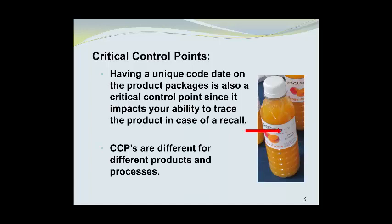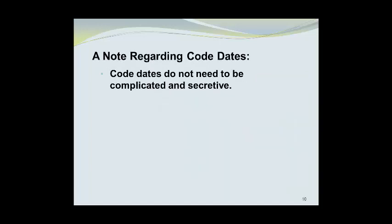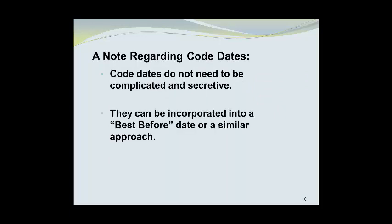CCPs are different for different products and processes. Code dates do not need to be complicated and secretive — they can be incorporated into a best before date. For example, a best before date of February 16th, 2017 at 3:07 PM would indicate the product was produced on February 16th, 2016 at 3:07 PM and has a one year shelf life. This type of device can be used for code dates and best before dates.